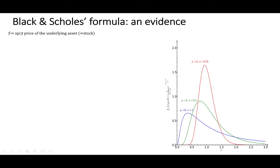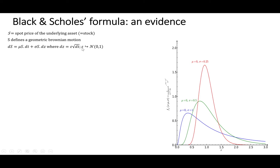We are going to write down S as the spot price of the underlying asset. S defines a geometric Brownian motion, which means that dS, the small change in the S price, is mu*S*dt plus sigma*S*dz, where dz is equal to epsilon times the square root of dt, epsilon defining a standard normal distribution.